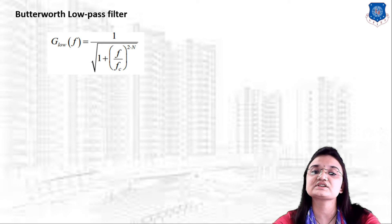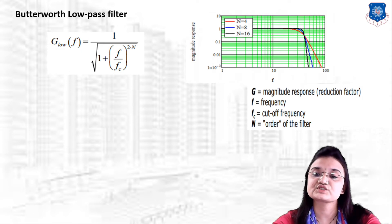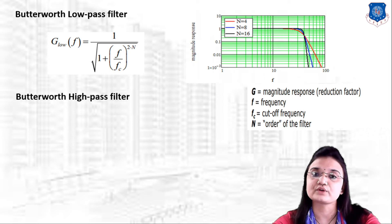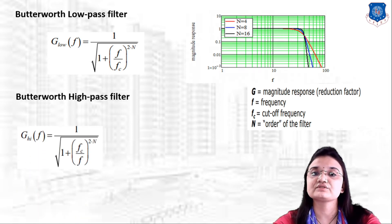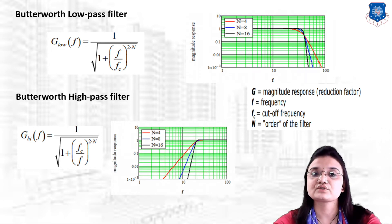A commonly used filter is the Butterworth low-pass filter. Using its equation, we can easily reduce high-frequency noise from a signal, where G is the magnitude response, f is frequency, f₃ is the cutoff frequency, and n is the order of the filter. Similarly, the Butterworth high-pass filter is used to reduce low-frequency noise, and after applying it we obtain a noise-free signal.